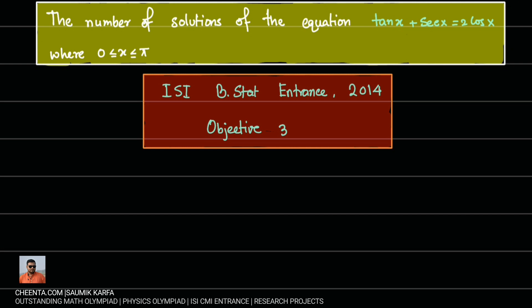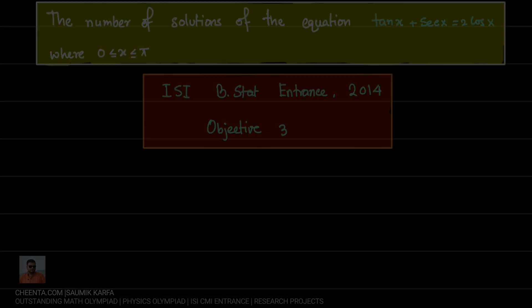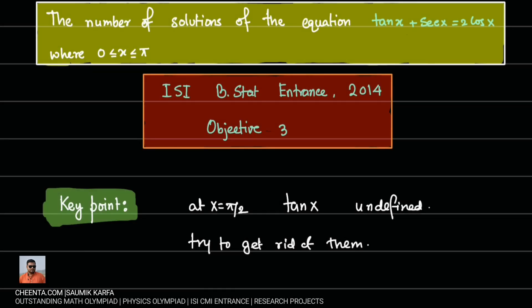This problem is based on the concept of solution of trigonometrical equations. First of all, the key idea of this problem is at x equal to π by 2, tan x is undefined because cos x gives 0. So now, we have to get rid of this difficulty from this equation to solve it.